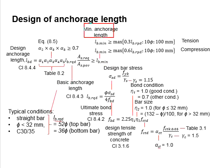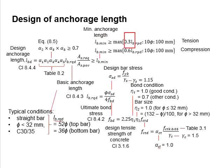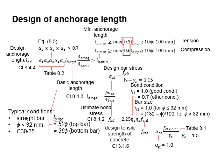The minimum anchorage length is governed by the type of anchorage — whether under tension or compression — and is taken as the maximum of three components. It must be at least 10 times the bar diameter and at least 100 mm. In terms of the basic anchorage length, a minimum of 30% is required for tension anchorage and 60% for compression anchorage.